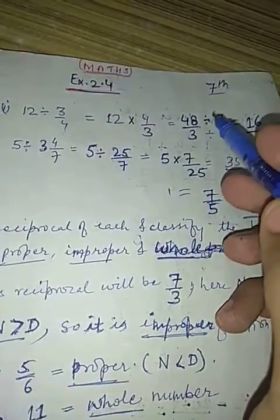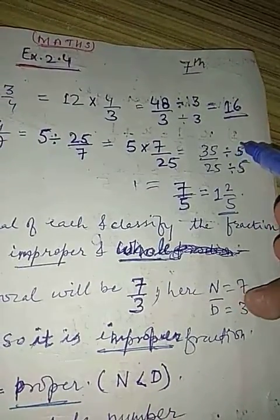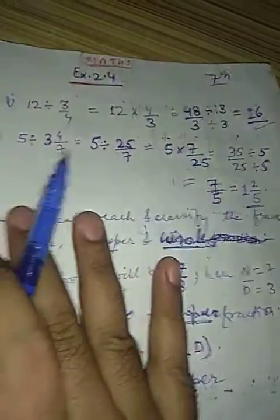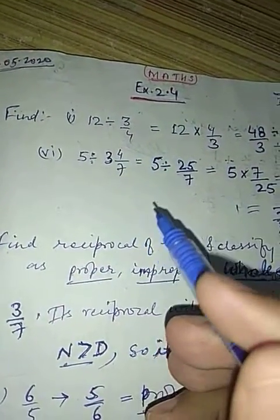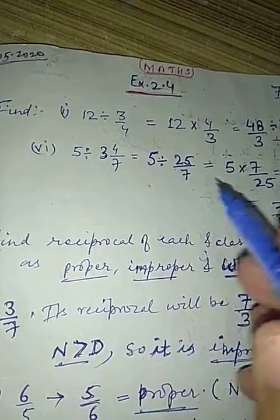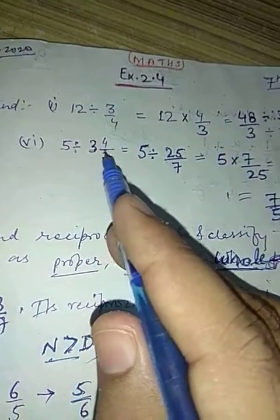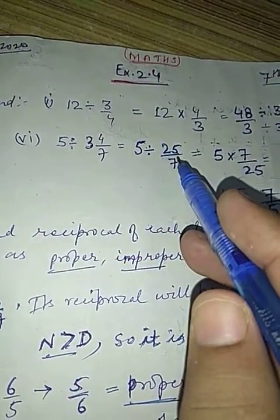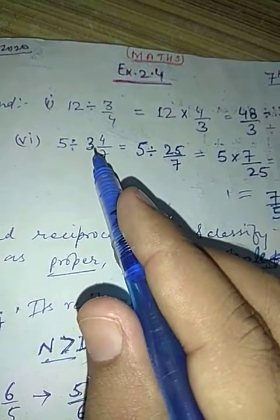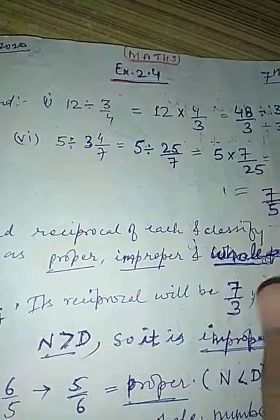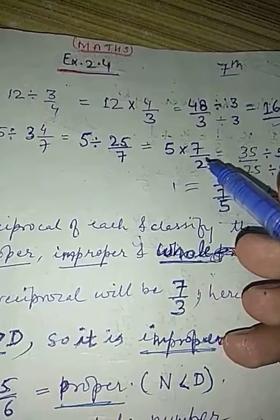Divide 48 by 3, you'll get 16. In the same way, sixth part: 5 divided by 3 whole 4 upon 7. First of all, change this mixed fraction to improper fraction. 5 divided by 25 upon 7. Seven times 3 is 21, plus 4 is 25 upon 7. Now 5 into, in the same way you'll do the reciprocal, 7 upon 25.